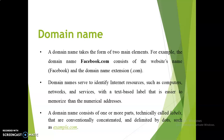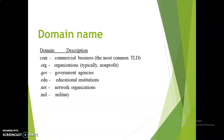Domain name is used to identify internet resources such as computers, networks, and services. It is also used to identify business purposes. Some domain name extensions are .com, .org, and .gov — these identify the type of the domain.